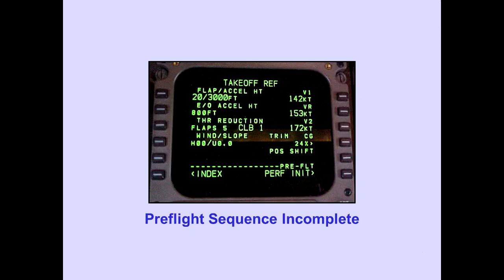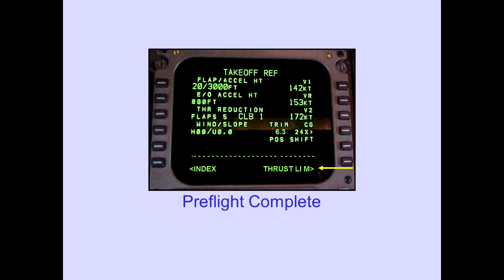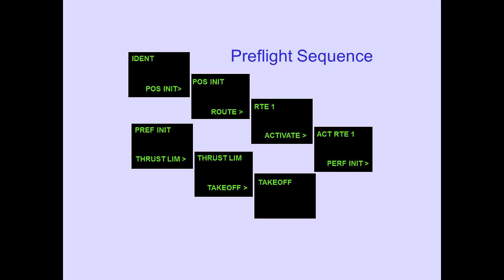If the pre-flight sequence is incomplete, "pre-flight" will still be displayed on the takeoff page and a prompt below directs the crew to the unfinished page. When all items in the pre-flight are complete, pre-flight is replaced by dashes and the thrust limit page prompt is displayed. In summary, the FMS-CDU pre-flight begins with the identification page. The lower right line select key is used to select the next page in the sequence. When a SID is entered into the route, the sequence is modified by pushing the departure-arrival key.